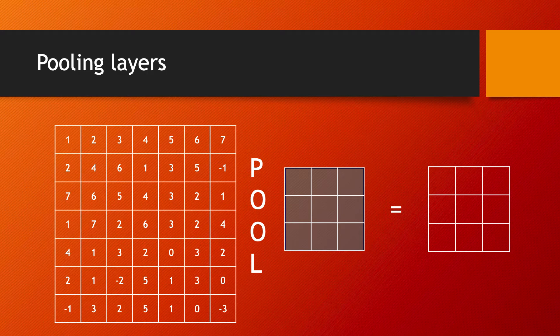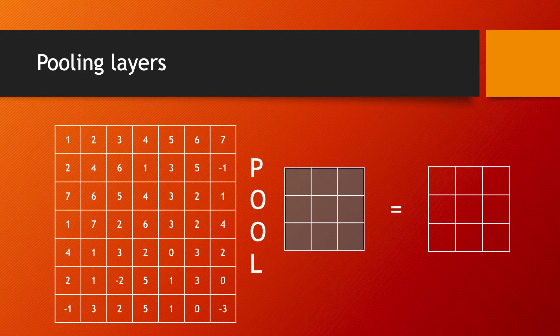Pooling layers are very useful and widely used in convolutional neural networks, together with convolutional layers and fully connected layers.